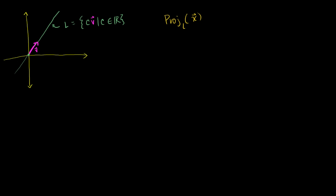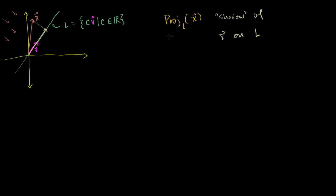So let me draw some other vector x — let's say that this right here is my other vector x. A projection — I'll give you just a sense of it first. I always imagined if you had some light source that were perpendicular, orthogonal to our line, so the light was shining down in that direction — and I'm doing that direction because that is perpendicular to my line — the projection of x onto this line is kind of the shadow of x. If this light was coming down, I would just draw a perpendicular like that, and the shadow of x onto L would be that vector right there.